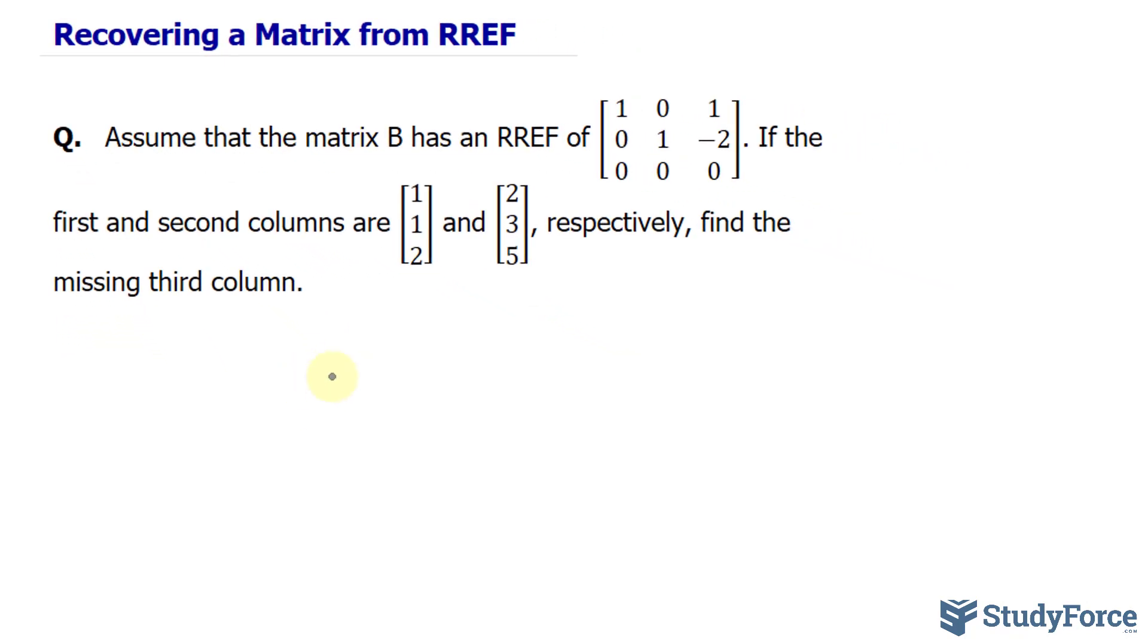So matrix B currently looks like this, before it was converted into RREF, where you have the first column being 1, 1, 2, the second column being 2, 3, 5, and the last column has three unknown elements. I'll call them A, B, and C. They will be our unknowns.